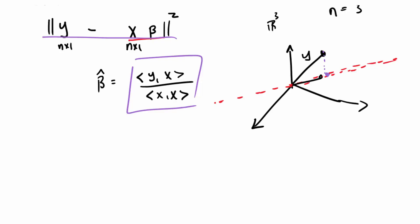So beta hat is the particular multiplier times x that we have to get to that point, and then beta hat times x is this specific purple vector right there.